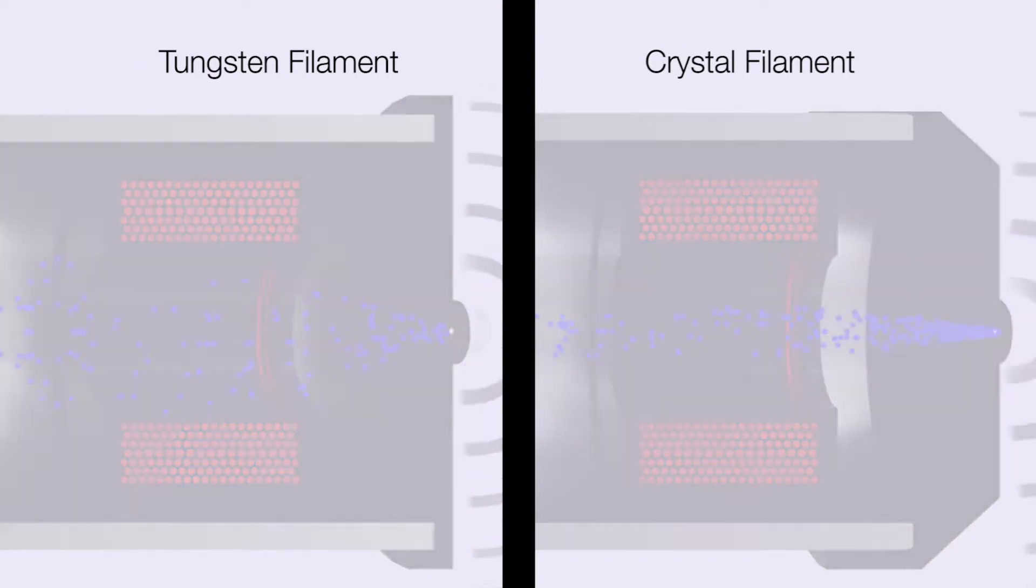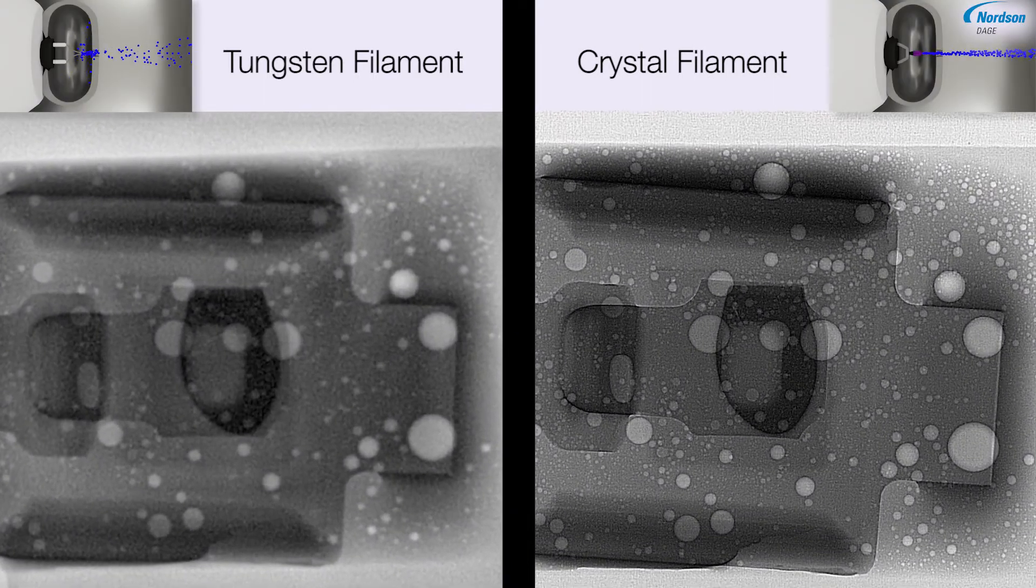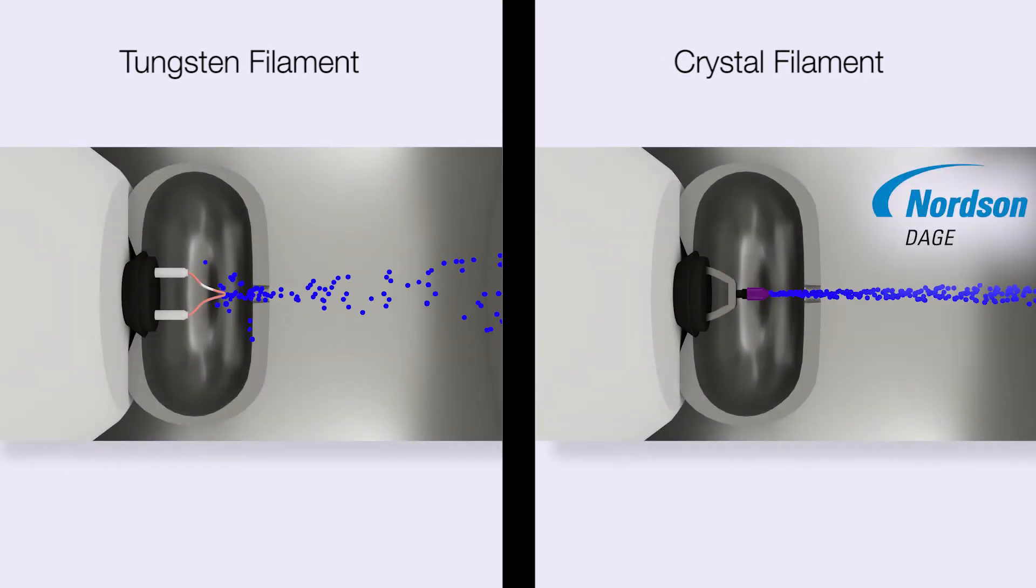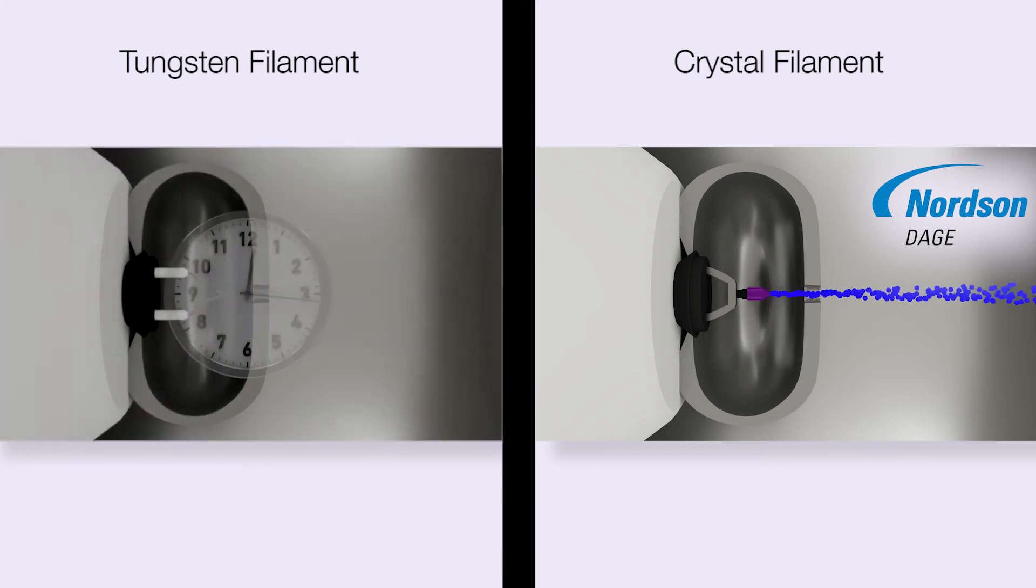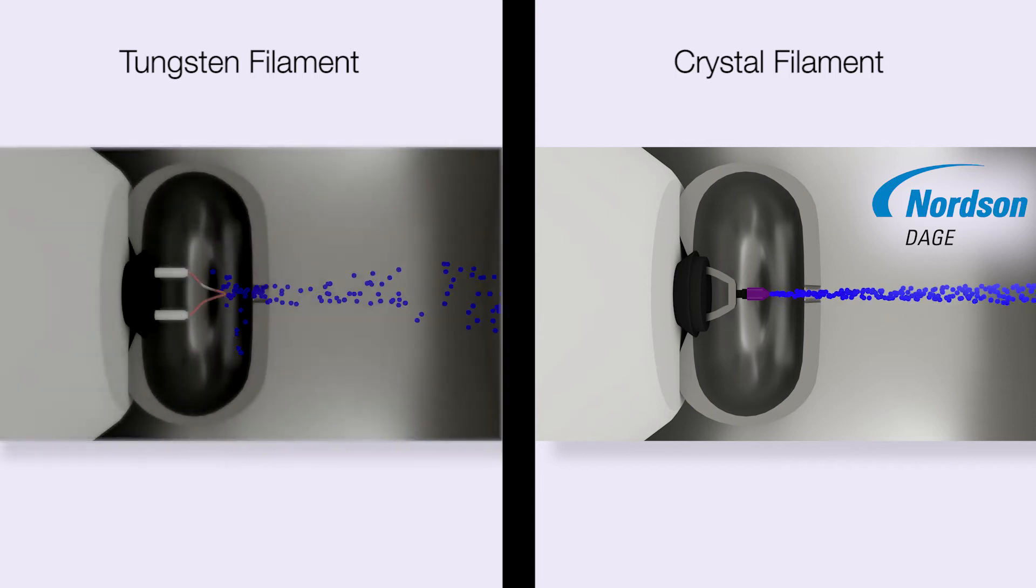Crystal filaments produce the highest quality x-ray images at the highest magnification. They also have a very long operating life, unlike tungsten filaments which need to be replaced regularly. This is a very disruptive process and requires opening up the x-ray tube.